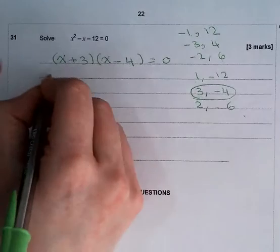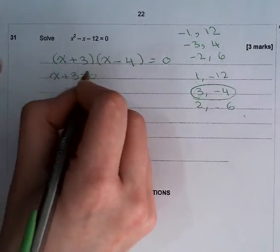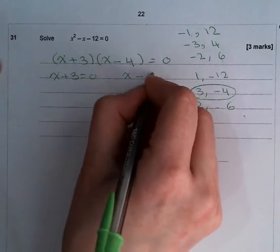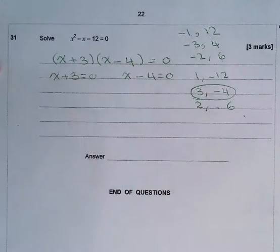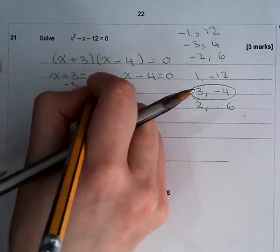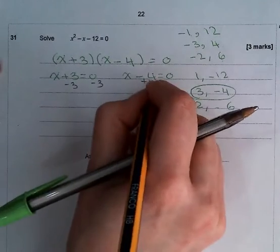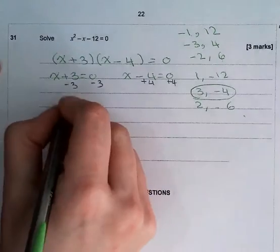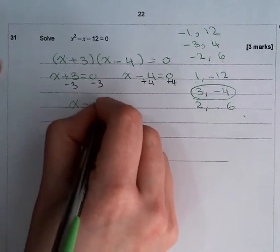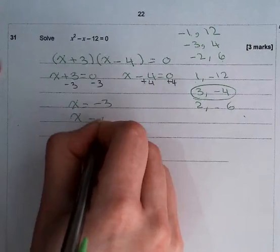This means (x + 3) = 0, and (x - 4) = 0. So minus 3 from both sides, and here plus 4 to both sides. We are going to have x = -3, and x = 4.